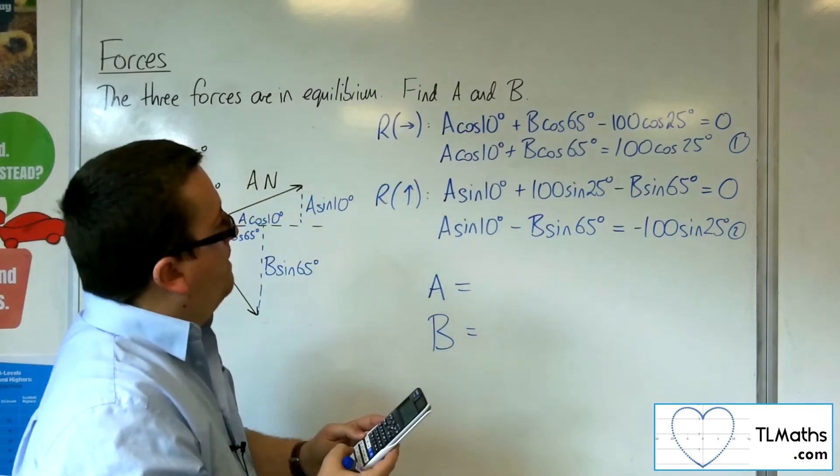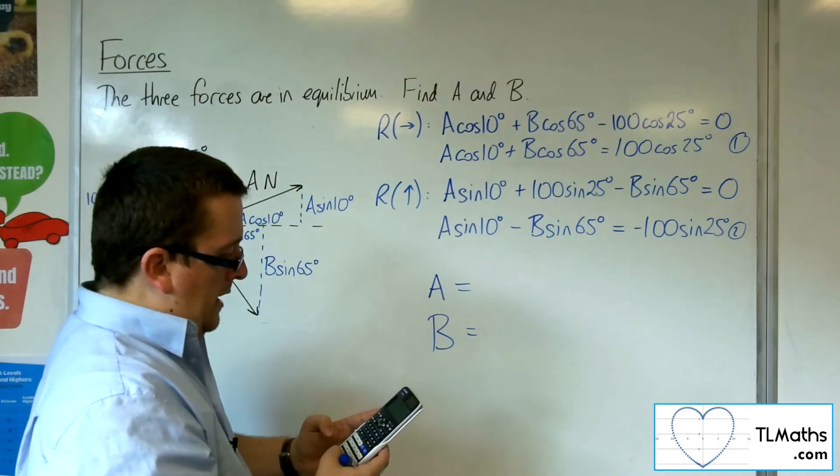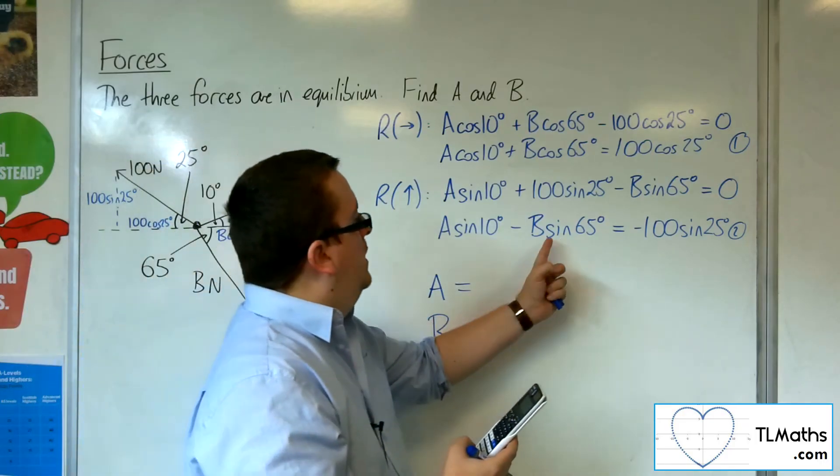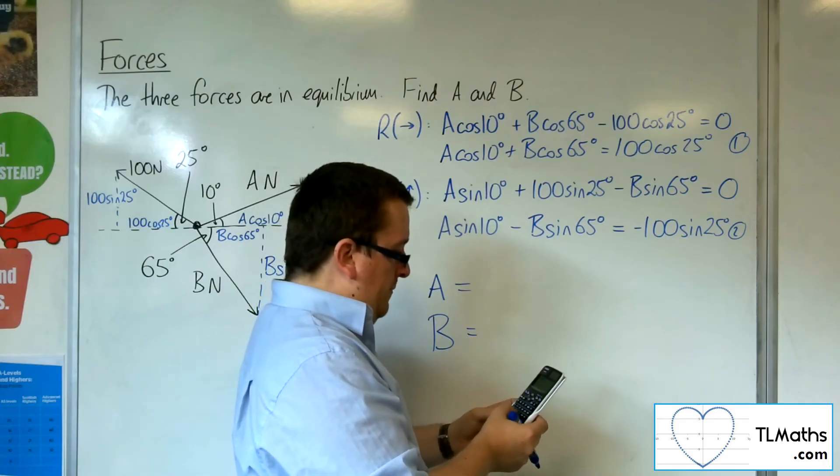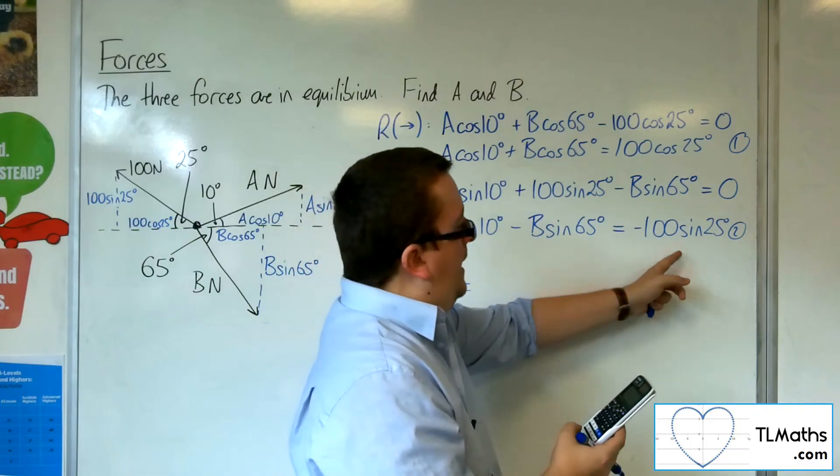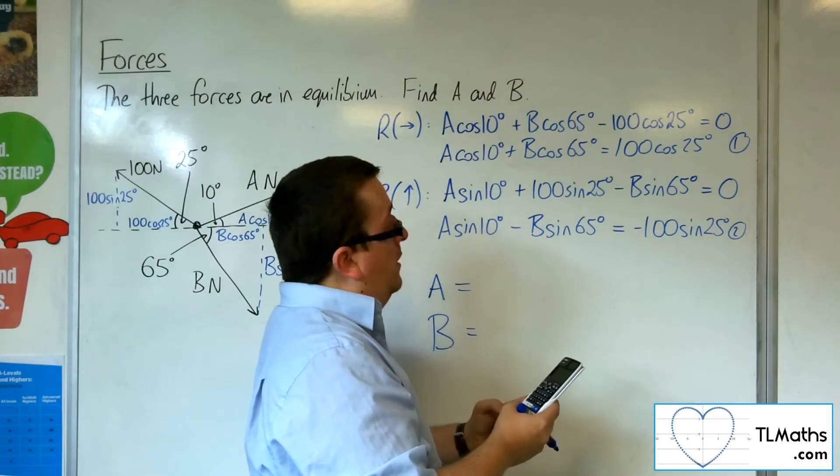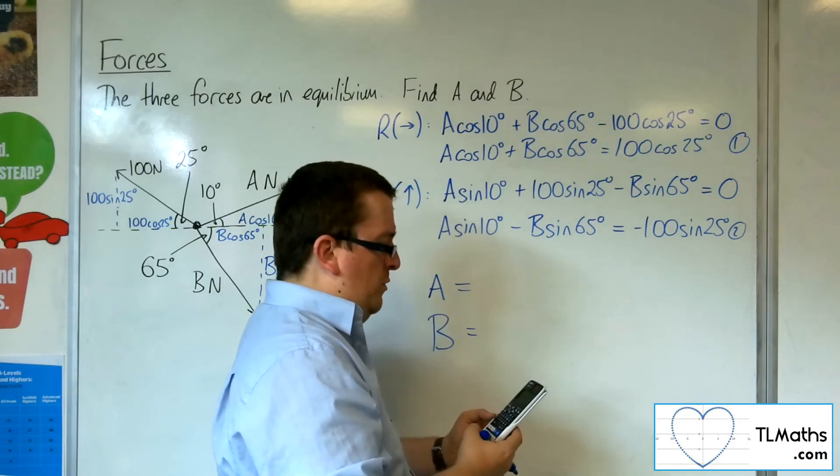Now for the next line, sine of 10, 0.1736. We've got minus sine of 65, so minus 0.9063, and minus 100 times sine of 25, which is minus 42.26.